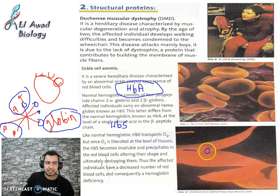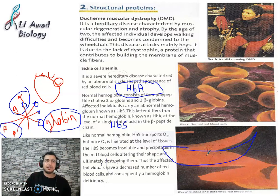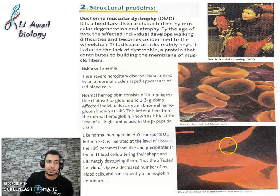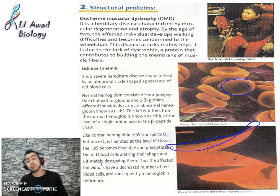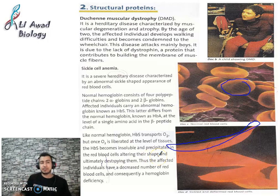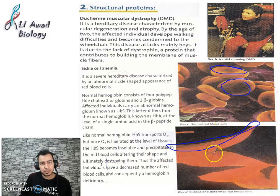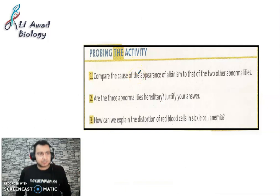When the red blood cell carrying abnormal hemoglobin picks up oxygen, the hemoglobin precipitates inside the cell, altering its shape to look like a sickle — like the agricultural tool used to harvest wheat. The red blood cell becomes deformed. This leads to sickle cell anemia — a serious condition. These patients need medical care.